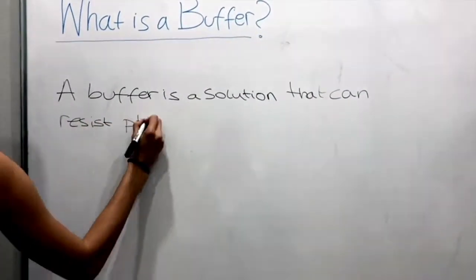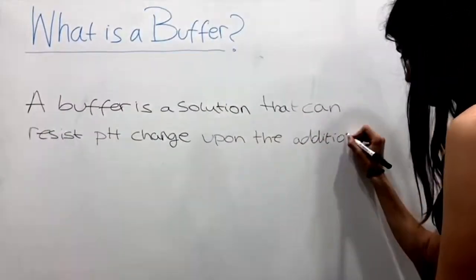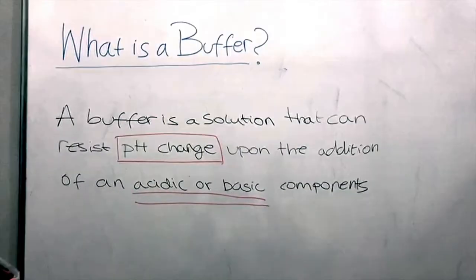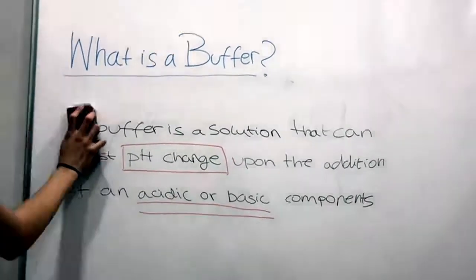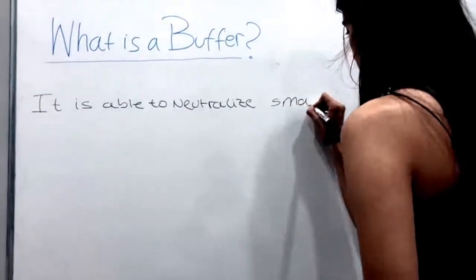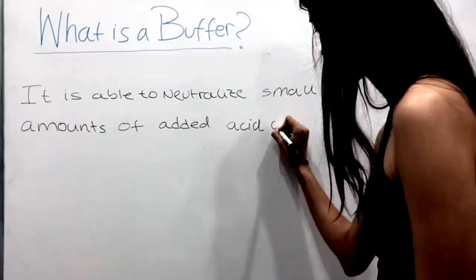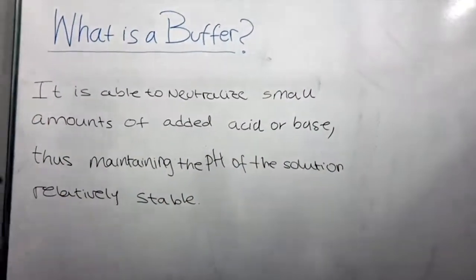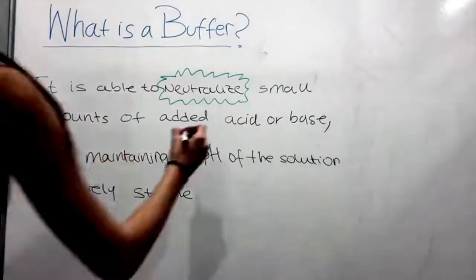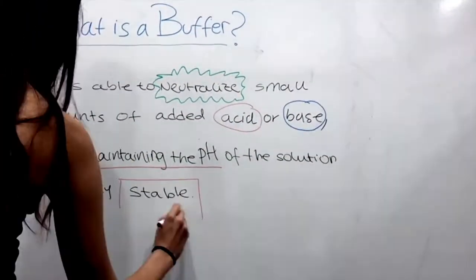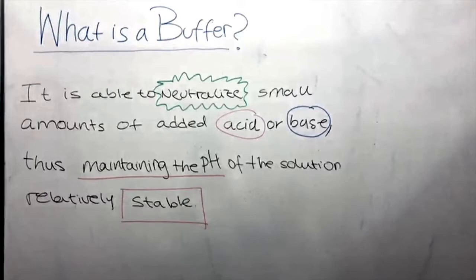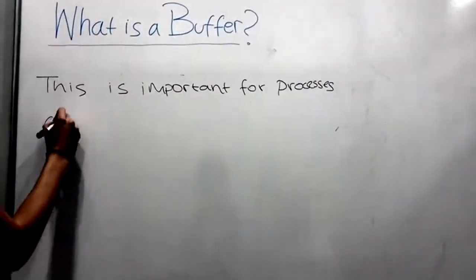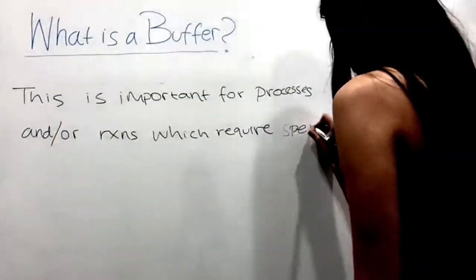Let's see what a buffer is. A buffer is a solution that can resist pH changes upon the addition of acid or basic components. It is able to neutralize small amounts of added acid or base, maintaining the pH of a solution relatively stable. This is very important for processes or reactions that require a specific pH range.